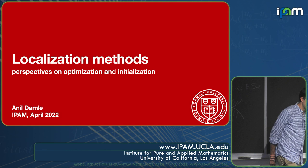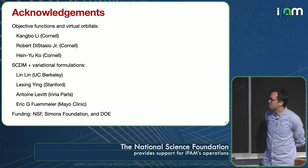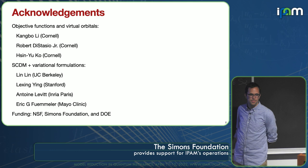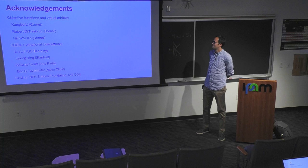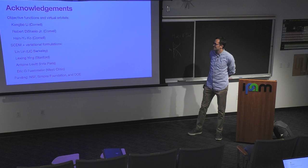I want to make the acknowledgments. The things I'm going to be talking about today are joint work with a number of people. The more recent things — pertaining to objective functions — is joint work with Kang Bo Lee, one of my students, who's right here in the front. He's responsible for large amounts of the first part of this talk. If you have questions after, I'm happy to chat, and Kang Bo is around for an extended period to talk to.